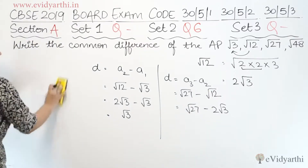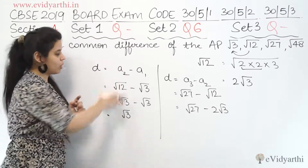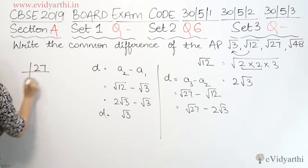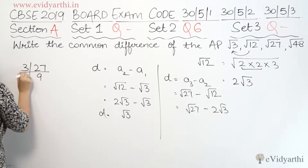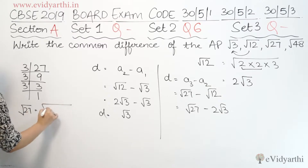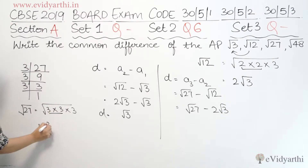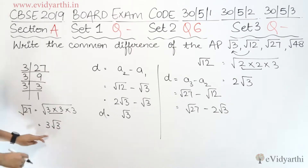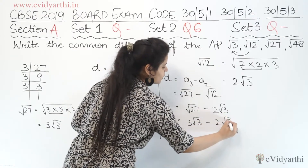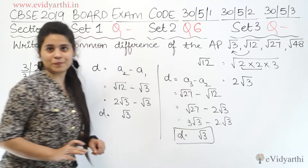Prime factorizing 27: divide by 3 to get 9, again by 3 to get 3, then 3 and 1. So √27 = √(3 × 3 × 3). There is a pair of 3s, so 3 comes out, leaving √3 inside. So √27 = 3√3. Therefore: 3√3 minus 2√3 — subtracting 2 from 3 gives 1 — so d = √3.